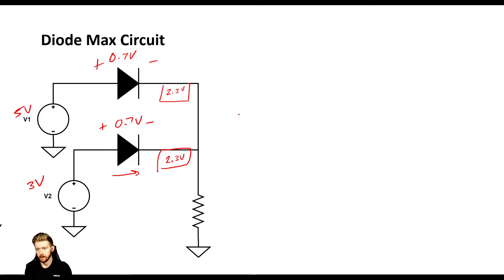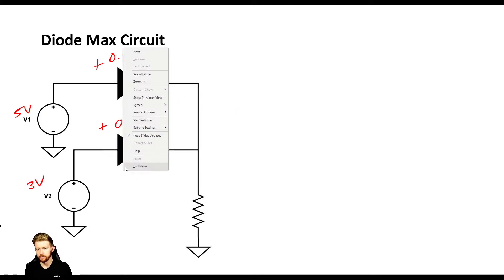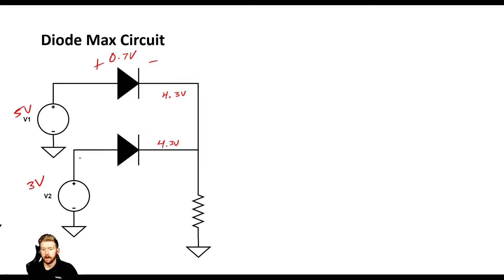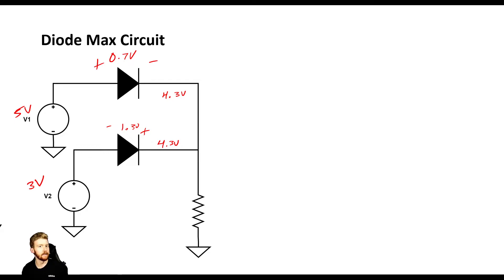Let's back up and try assuming V1 is conducting instead. If current flows through V1, we get 4.3 volts at the output node, and therefore 4.3 volts at the bottom node as well. Now for V2, instead of a 0.7 volt forward drop, there would be a 1.3 volt drop in the reverse direction — and that's perfectly fine, because diodes can have any reverse voltage drop they want as long as it's less than breakdown. So no current flows through V2, and current flows through V1. This makes sense.